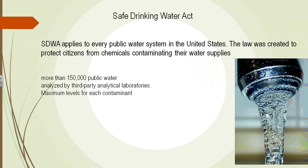The EPA examined the Safe Drinking Water Act. There are more than 150,000 public water companies in the United States, and the EPA decided each needed to be tested by a third-party analytical lab. Maximum contaminant levels were developed for each substance — a certain amount of copper, a certain amount of lead, a certain amount of pesticides. All of these had to be controlled and treated before water could be passed on to cities.